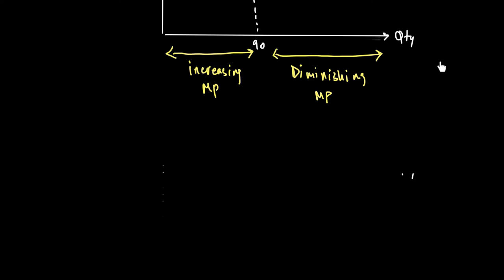Diminishing marginal returns sets in and MP falls, which also means MC starts to rise — marginal cost starts to rise — which means each additional unit of output costs more and more to produce because worker productivity is going down. So as long as MP is falling, marginal cost must be rising, and vice versa, as long as MP is rising, MC is falling. They have an inverse relationship between MP and MC.